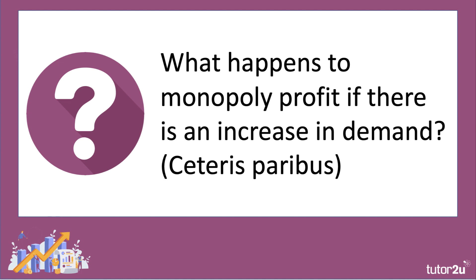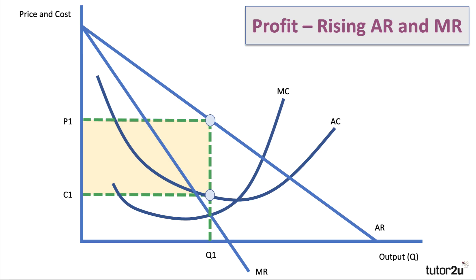Here's the first example: what happens to monopoly profit if there is an increase in demand, ceteris paribus — all other factors held constant? Here's an initial situation: the firm is making some monopoly supernormal profit illustrated by the yellow area. Don't forget the monopolist has a downward sloping demand curve — average revenue — and with it the marginal revenue slopes beneath it.